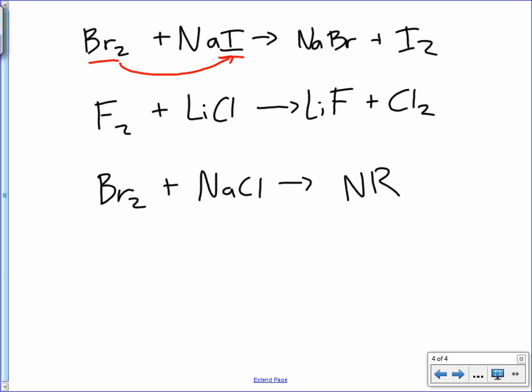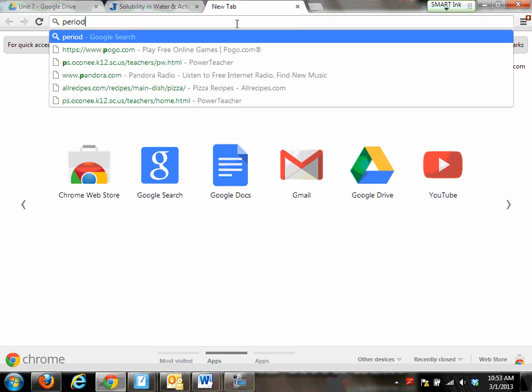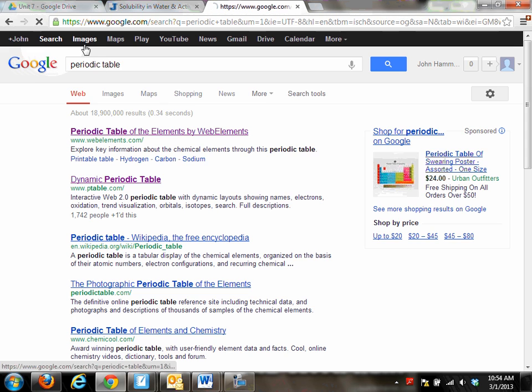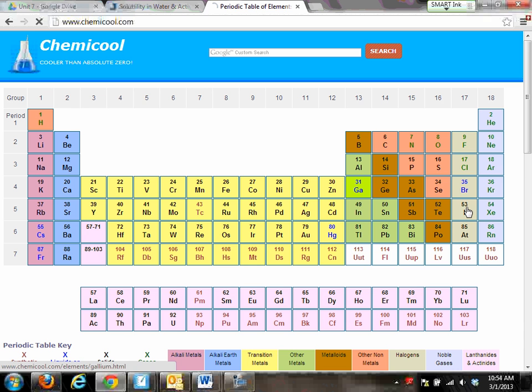So, for activity series of non-metals, the rules are pretty simple. We're only going to focus on halogens. So, basically, if you are to look at a periodic table, let me pull one up quickly. If you are to look at a periodic table, remember, we're talking about the halogens. The higher they are on the periodic table, the more active they are. So, fluorine is going to replace any of the ones below it.